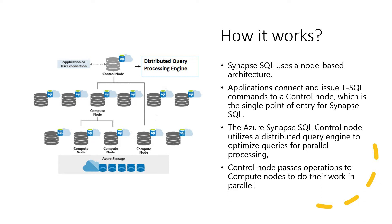Whenever we execute SQL, the single point of entry is the control node. The control node utilizes a distributed query engine — it decides how the query needs to be distributed so that it is most optimized and performance efficient. The control node distributes it to different compute nodes, choosing which compute nodes to run the query on and passing the query to those nodes. As a result, the query can be executed in parallel, making it very performance efficient.